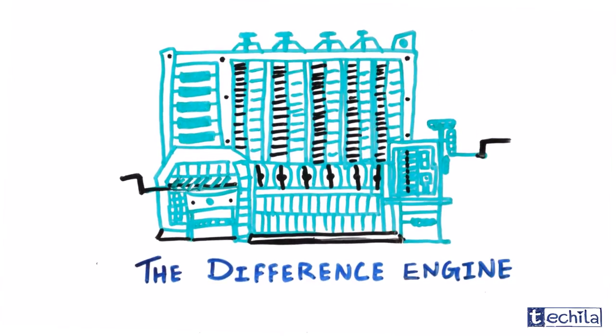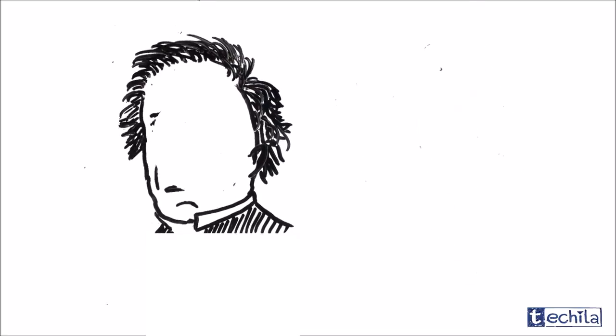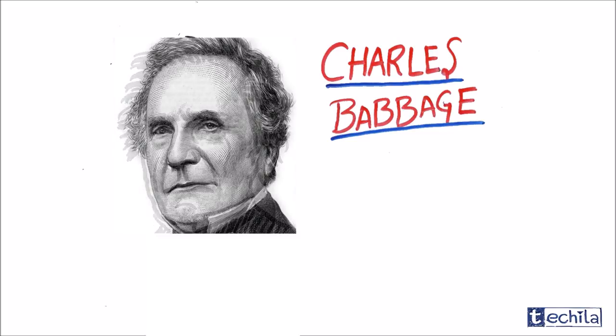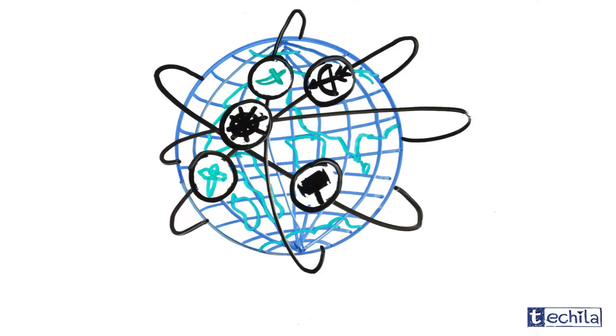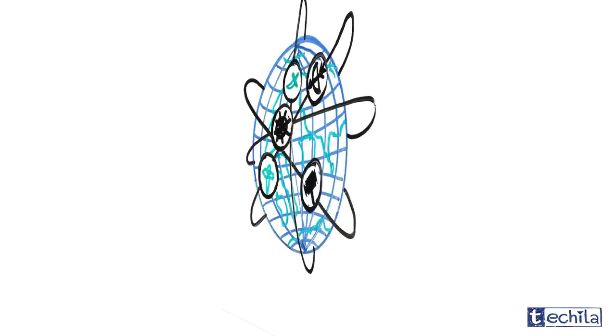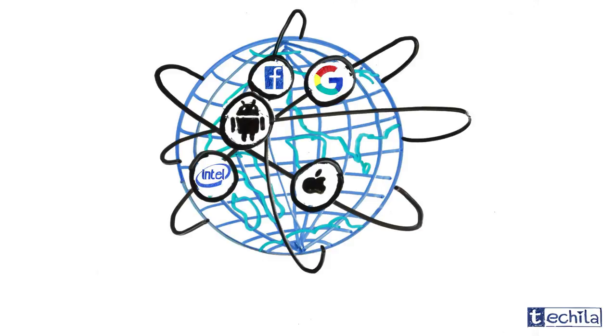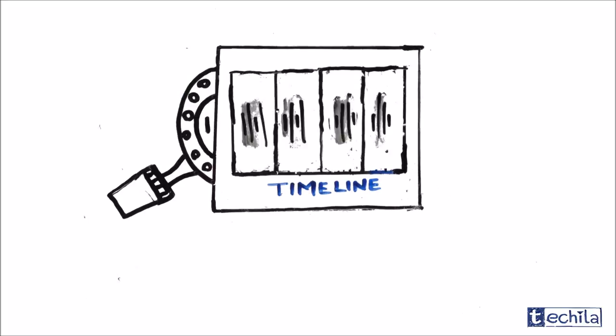In early 19th century, the first computing device called the Difference Engine was made by a mechanical engineer and a polymath, Charles Babbage. This machine was a century ahead of its time.